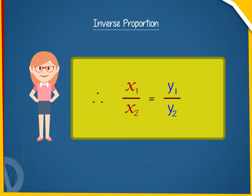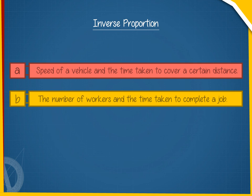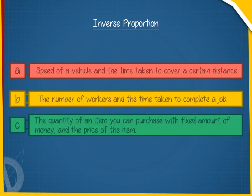Some examples of quantities that vary inversely with each other are: a. Speed of a vehicle and the time taken to cover a certain distance, b. The number of workers and the time taken to complete a job, c. The quantity of an item you can purchase with fixed amount of money and the price of the item.